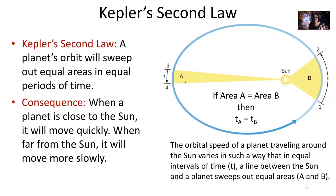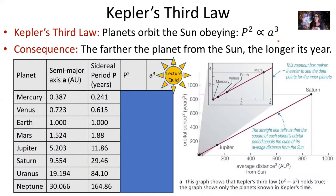The speed at which a planet orbits around the sun is called the orbital speed. This orbital speed varies over the course of a planet's orbit around the sun. Then we come to Kepler's third law, which says that planets orbit the sun obeying this relationship: P squared is the orbital period of the planet.